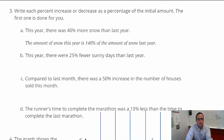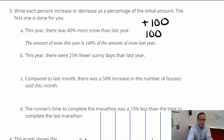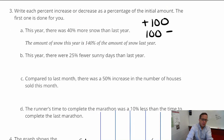If it's an increase, you're adding on to 100%. If it's a decrease, you're taking away from 100%. For part B, this year there were 25% fewer sunny days than last year, so we do 100 minus 25, which is 75%.